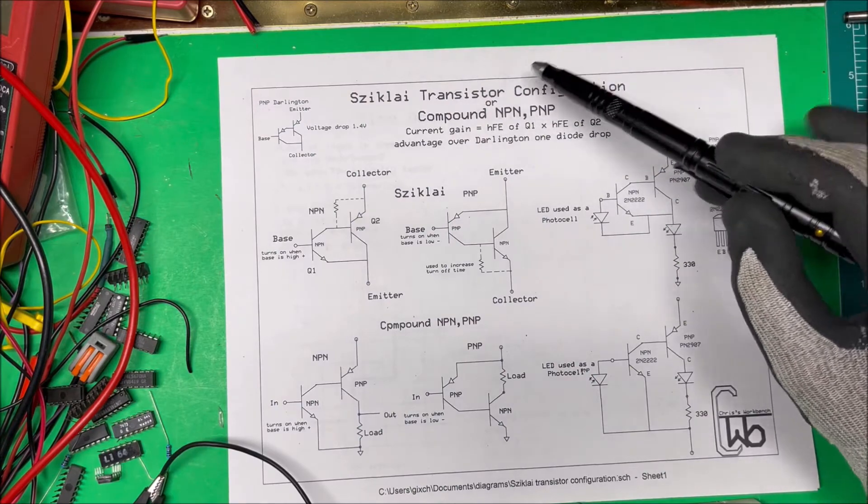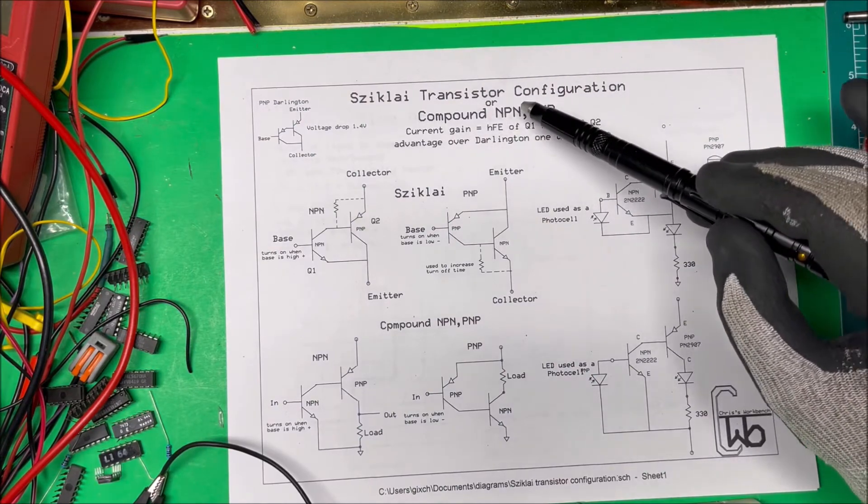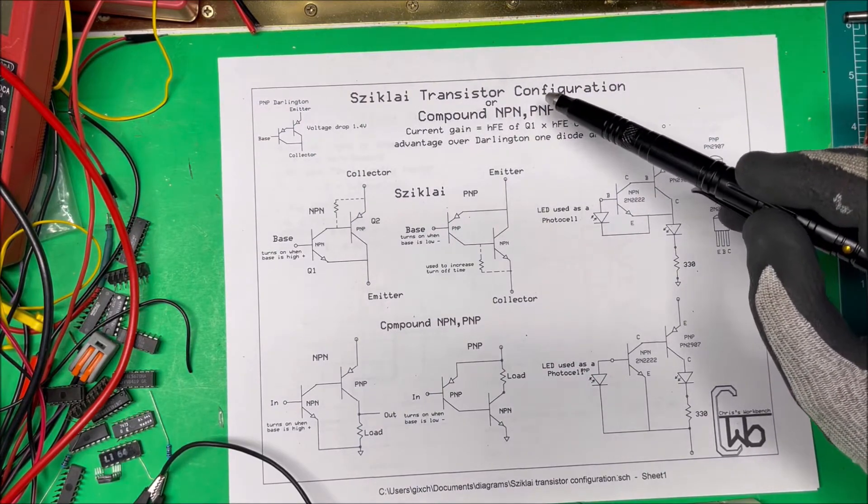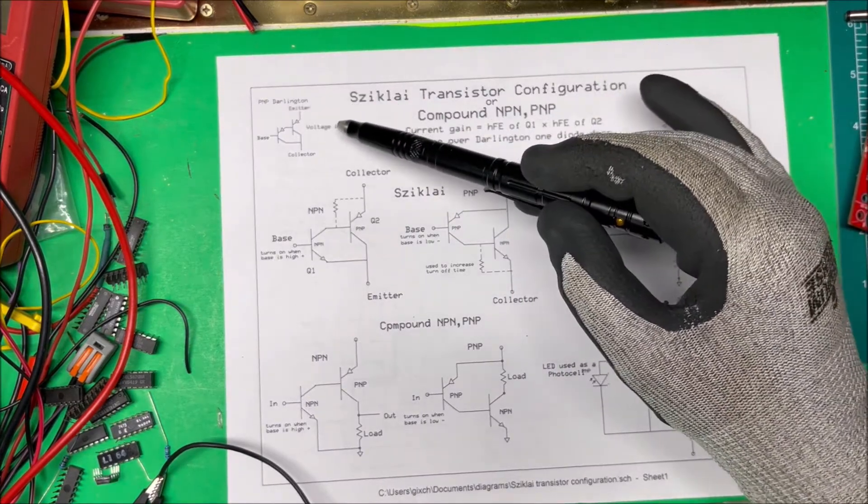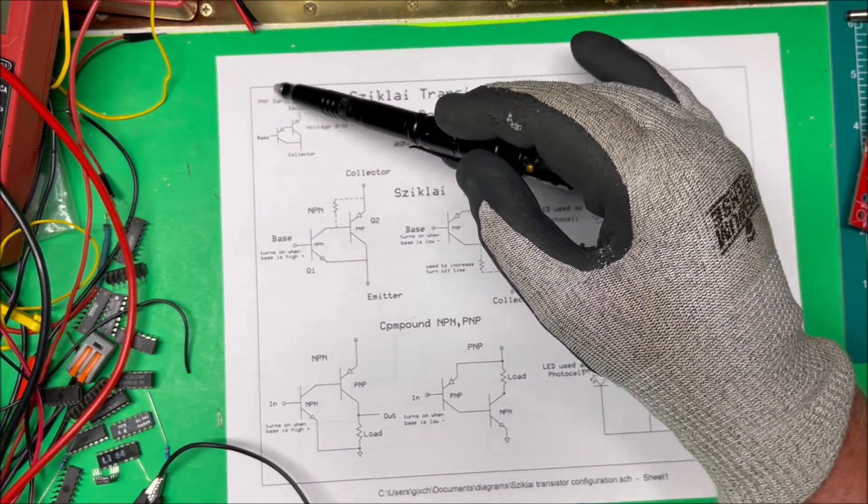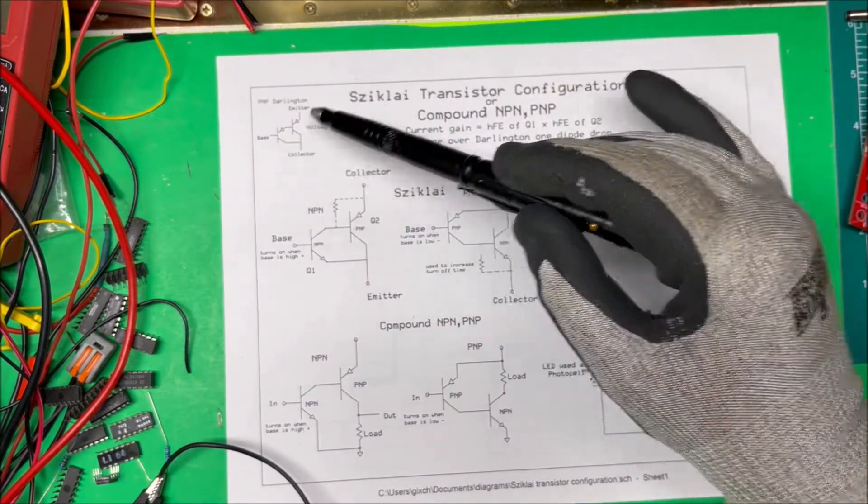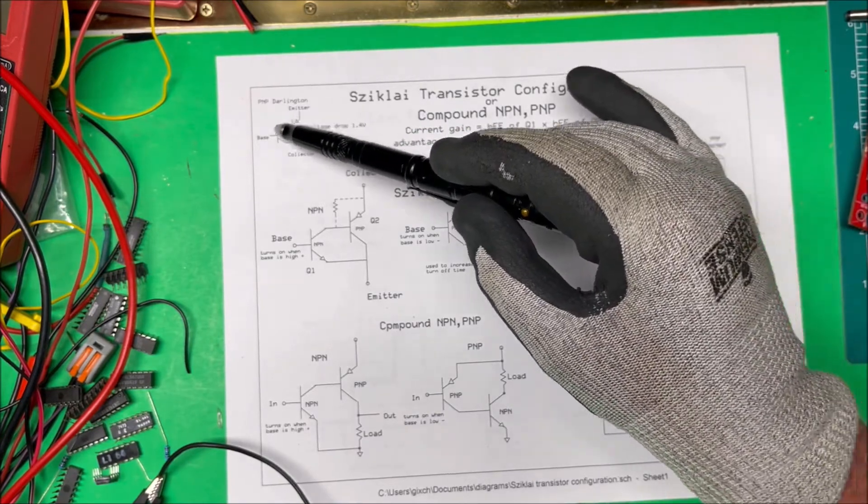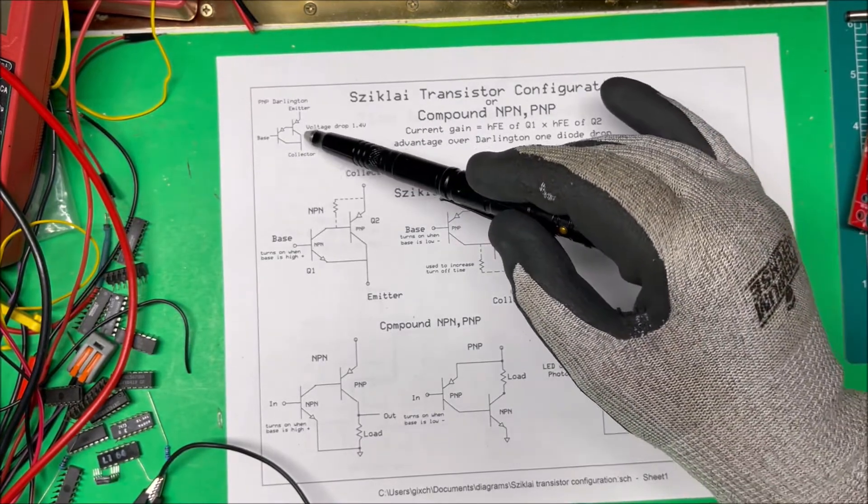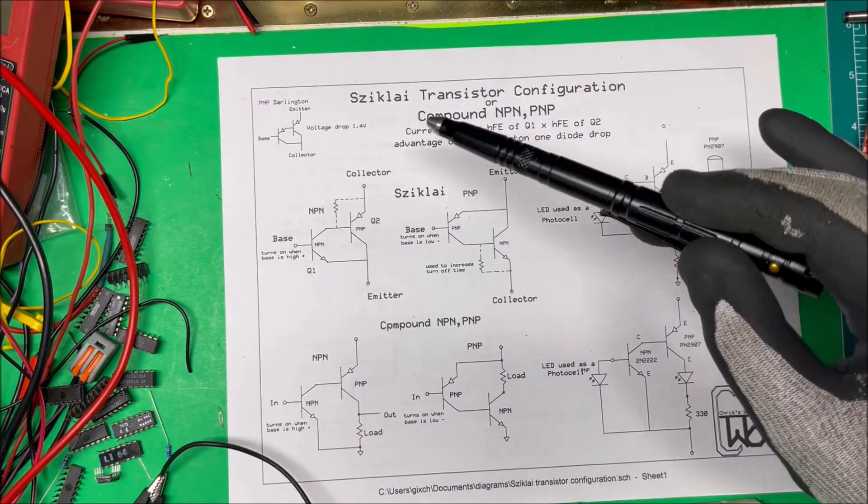Let's take a look at a Sziklai transistor configuration or a compound NPN-PNP transistor. We're familiar with the Darlington where it has, in this case, a PNP with two PNP transistors connected like this.